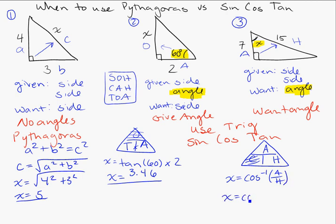So, this is going to tell us that X is equal to cosine inverse of A over H. So, X is equal to cosine inverse of 7 over 15. And we plug that into our calculator. We get 62.18. And this is an angle, so that's degrees. And we could probably round that to just 62 degrees.